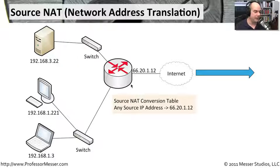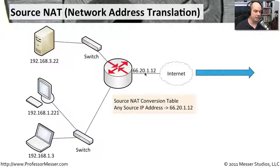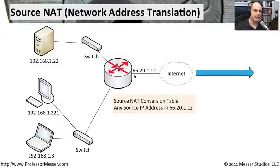So it's taking and saying, you're no longer 192.168.3.22. To the rest of the internet, you're going to look as if you are 66.20.1.12. And when Google receives this request from this user, it sees that the source was 66.20.1.12. And it sends the response back to 66.20.1.12.